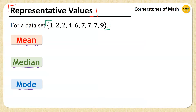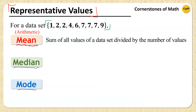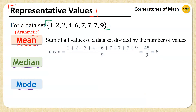Consider a data set with values 1, 2, 2, 4, 6, 7, 7, 7, and 9. As for the mean, there are many kinds of means, but in this video I will only talk about arithmetic mean, which is the sum of all values of a data set divided by the number of values. For the given data set, we have 9 values total, so we add up those 9 values and divide by 9, which gives the arithmetic mean of 5.